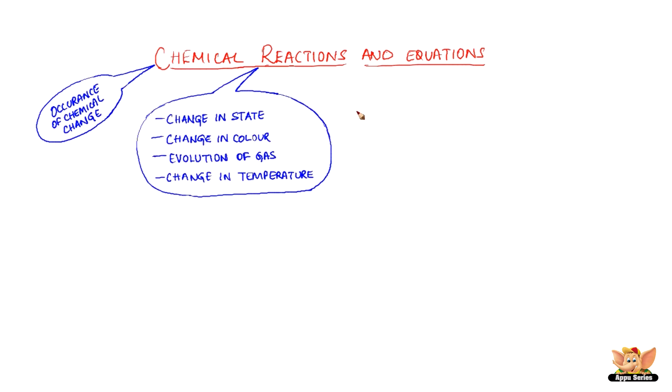Let's look at some examples now. Rusting of iron has a change in state. You can observe a powdery substance, which is iron oxide, on the iron when it rusts. The powdery substance is yellowish in color.